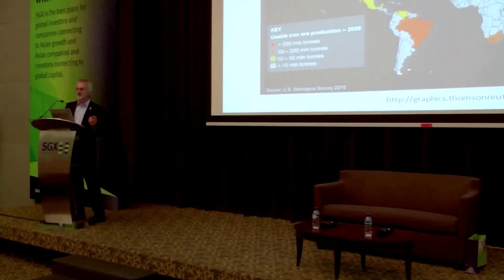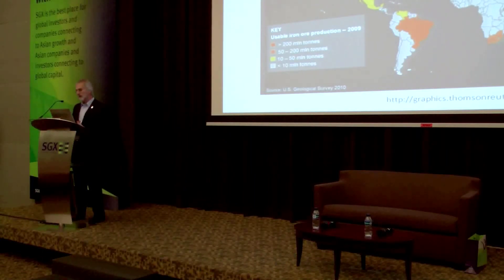Globally, you can see the big producers on the map in red — China, Australia, Brazil, India, Russia, and South Africa. Pretty well all countries have some form of iron; it's just a matter of whether or not it's enough to justify mining. There are some economies of scale associated with iron ore mining, so it's a matter of deciding whether you have a big enough deposit and can compete with the really big producers that can operate at fairly low prices.